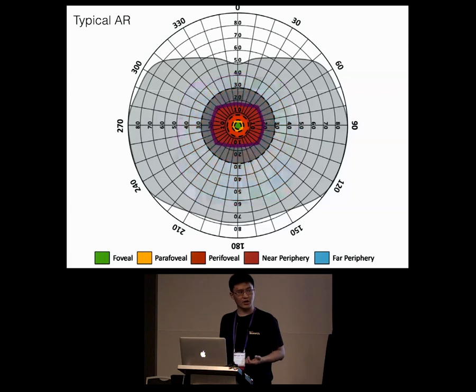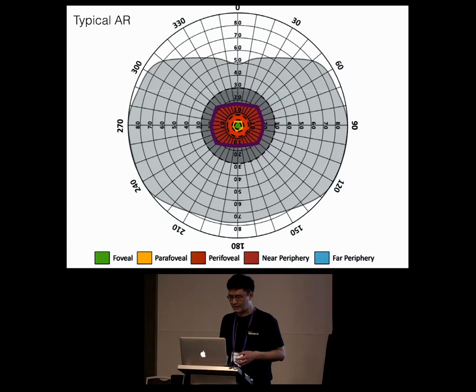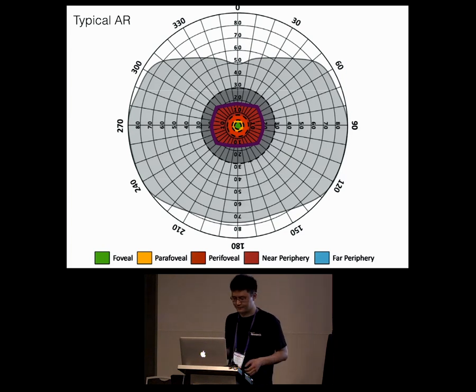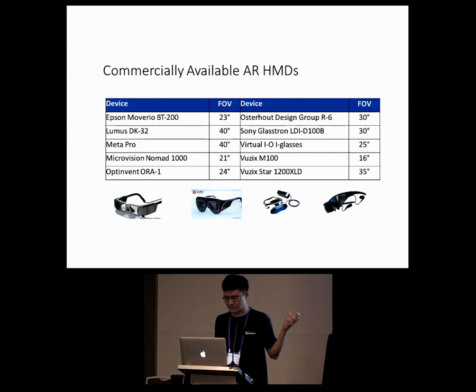In current generation augmented reality systems, the situation is even worse. The field of view is even narrower, down to 40 degrees horizontal — just that little tiny purple area in the middle. Indeed, 40 degrees is actually the upper end for current commercial AR devices.